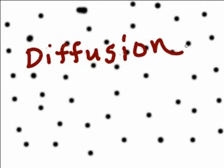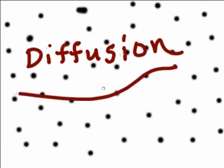There is a name given to this process — the process by which particles move from an area of high concentration to an area of low concentration. That process is called diffusion. Diffusion is the movement of particles from an area of high concentration to an area of low concentration.